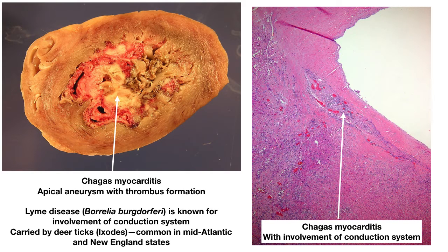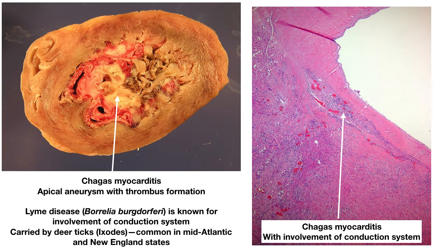Chagas myocarditis is known for having an apical aneurysm. On the left, looking down on the apical cross-section, you can see thrombus formation within that aneurysm and that the lumen of the left ventricle is much more dilated. On the right is involvement of a portion of the conduction system — a branch from the AV node — where you can see little blue dots. Lyme disease caused by Borrelia burgdorferi is well known for involvement of the conduction system. In the United States, it's most common in the mid-Atlantic and New England states, carried by deer ticks.